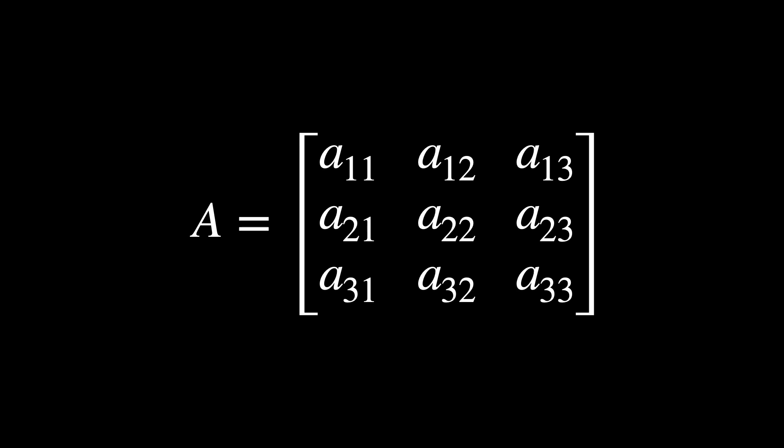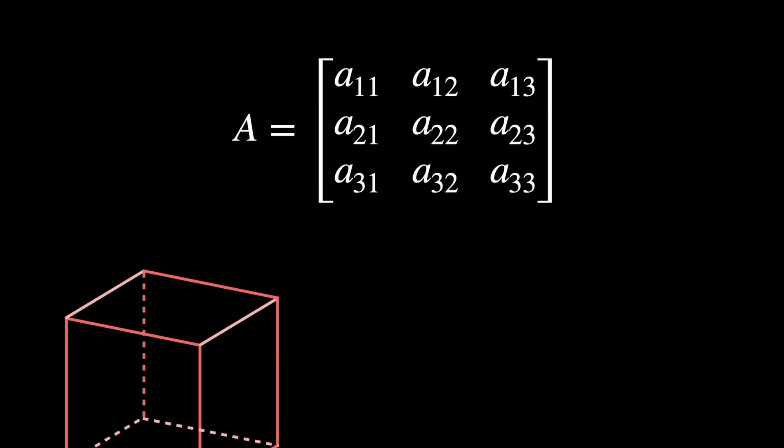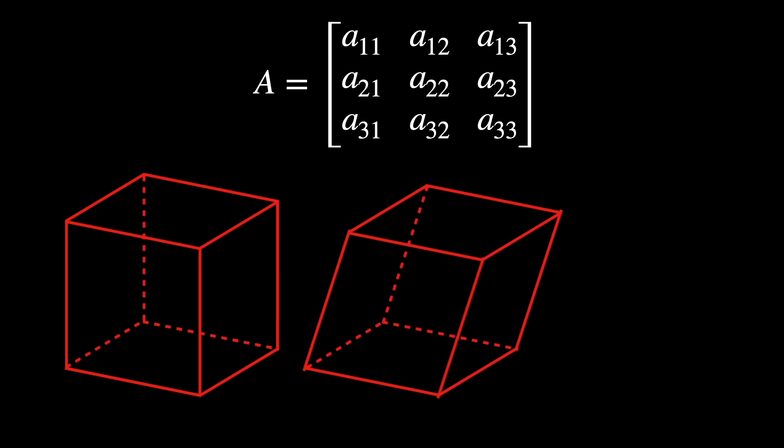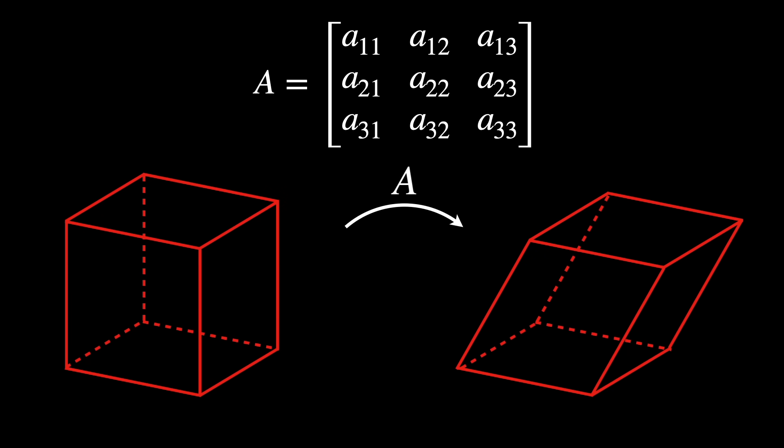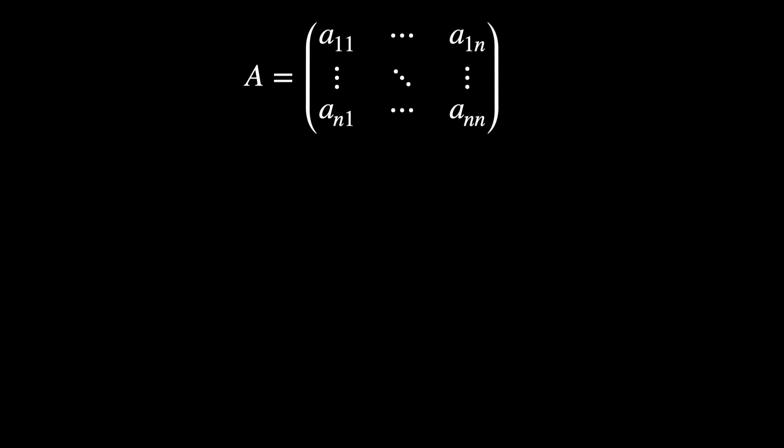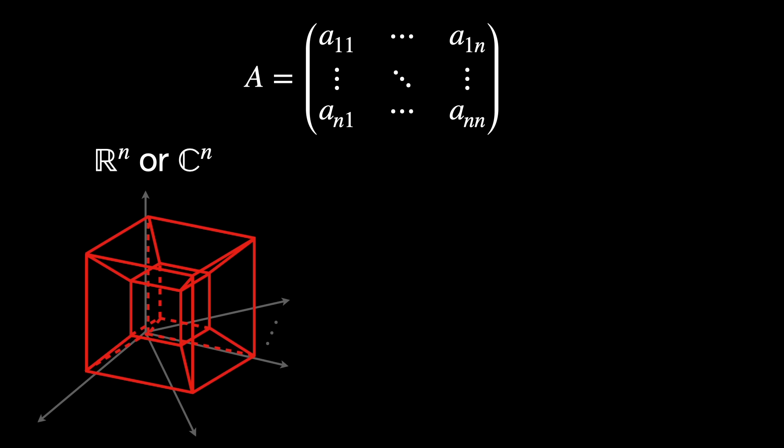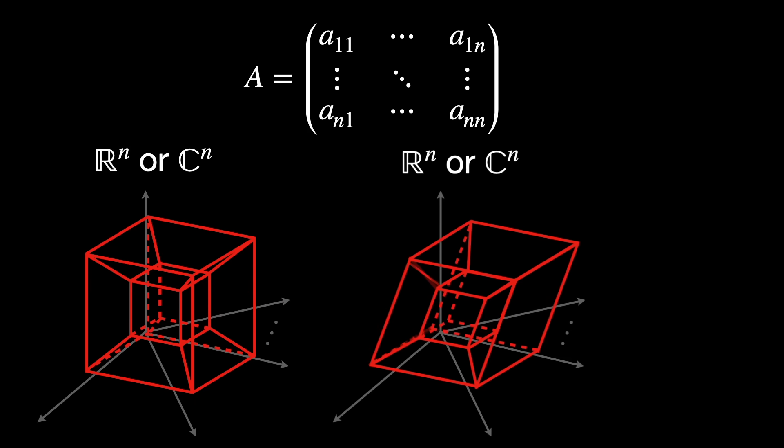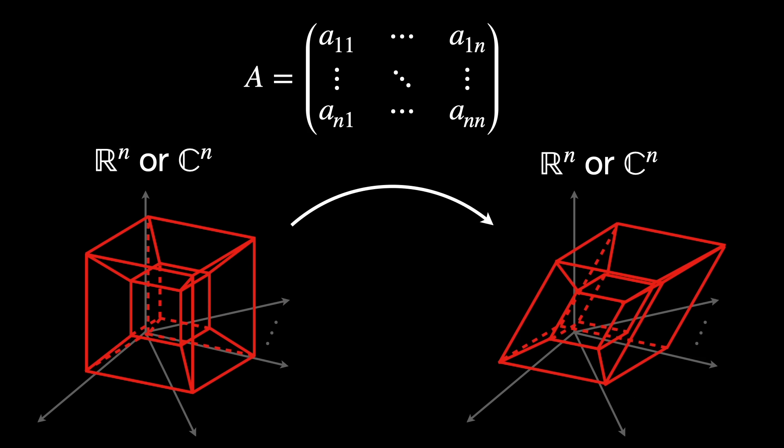Now, imagine a 3x3 matrix. It is the same idea, but in 3 dimensions. We can go even further to n-by-n matrices acting on R^n or C^n, real or complex spaces. And we can study how these matrices transform higher dimensional vectors.